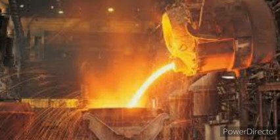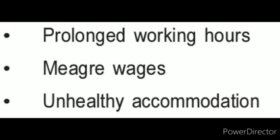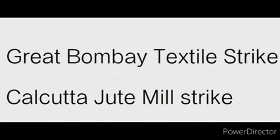But the conditions of the laborers were not so good during that period — they were exploited in the extreme. Look at the screen; these are the major problems faced by the laborers during the British rule. During this period there were no trade unions, but the workers agitated whenever they suffered extreme exploitation. The Great Bombay textile strike and Calcutta jute mill strike are examples of such agitations.